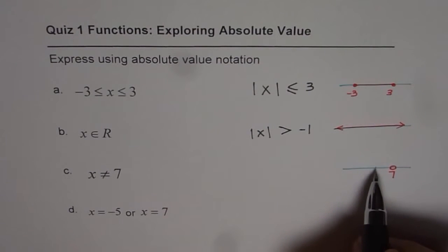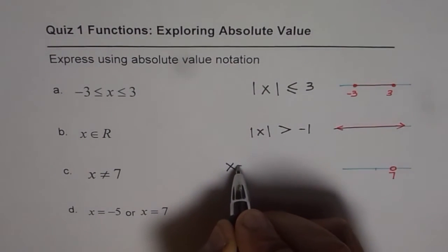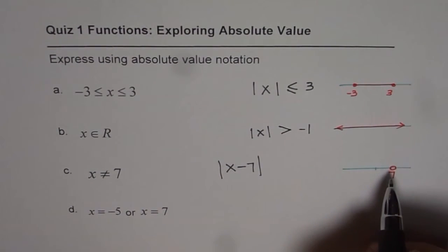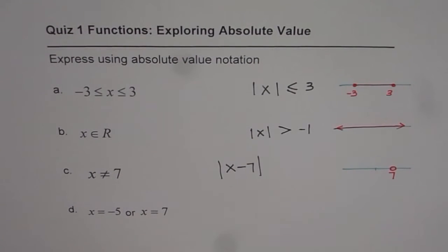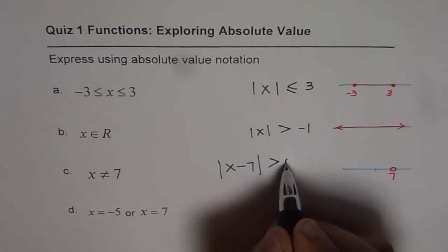Well, we can imagine that the absolute function has been translated 7 units to the right. That means, absolute value of x minus 7. And if we say that absolute value of this is, we want all the values but not 7, greater than 0.